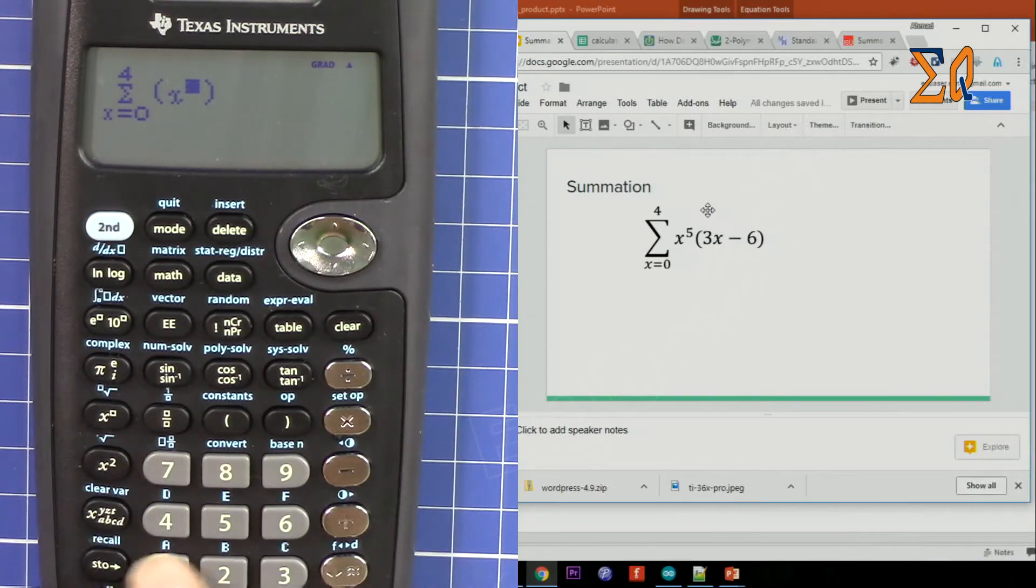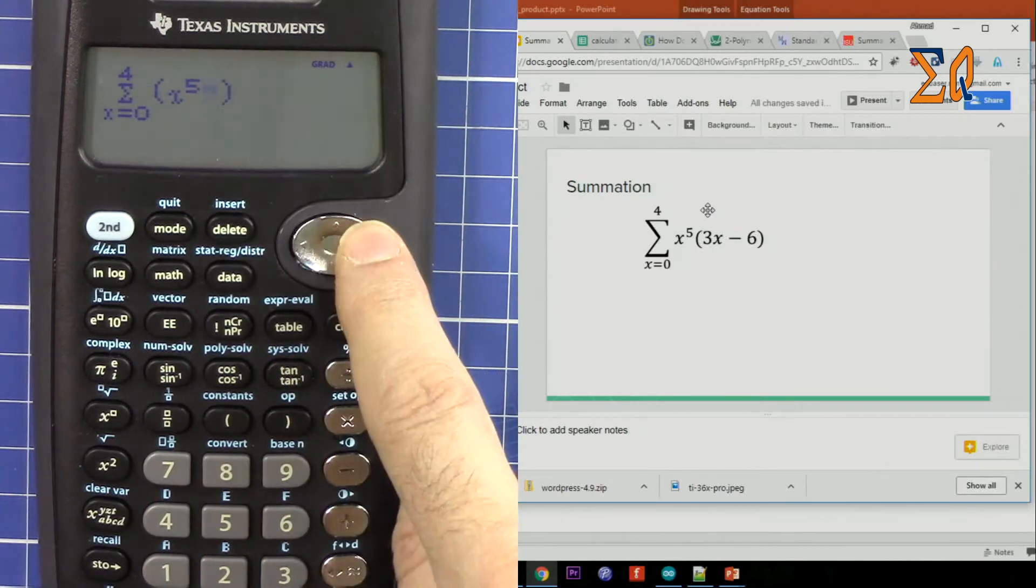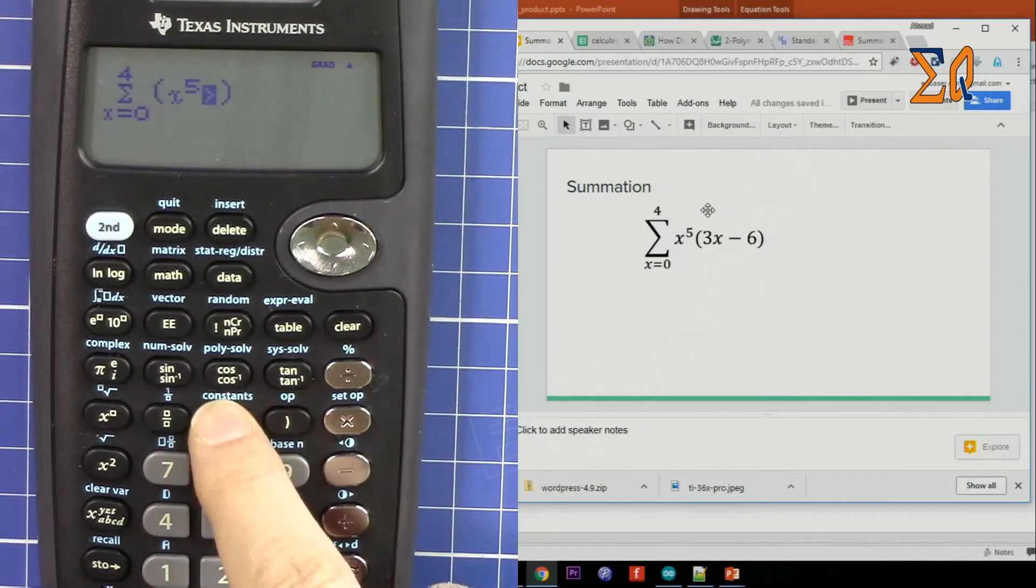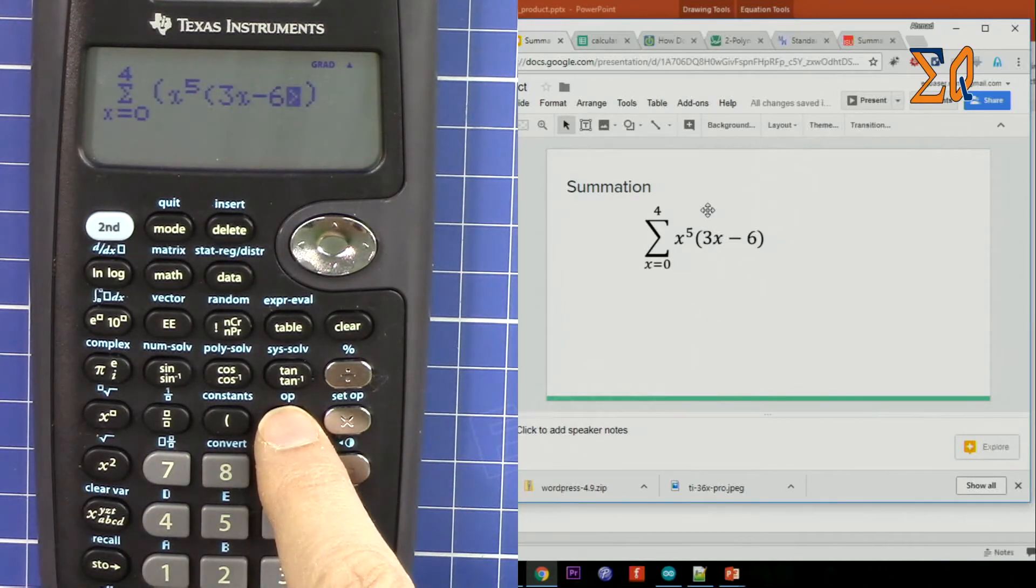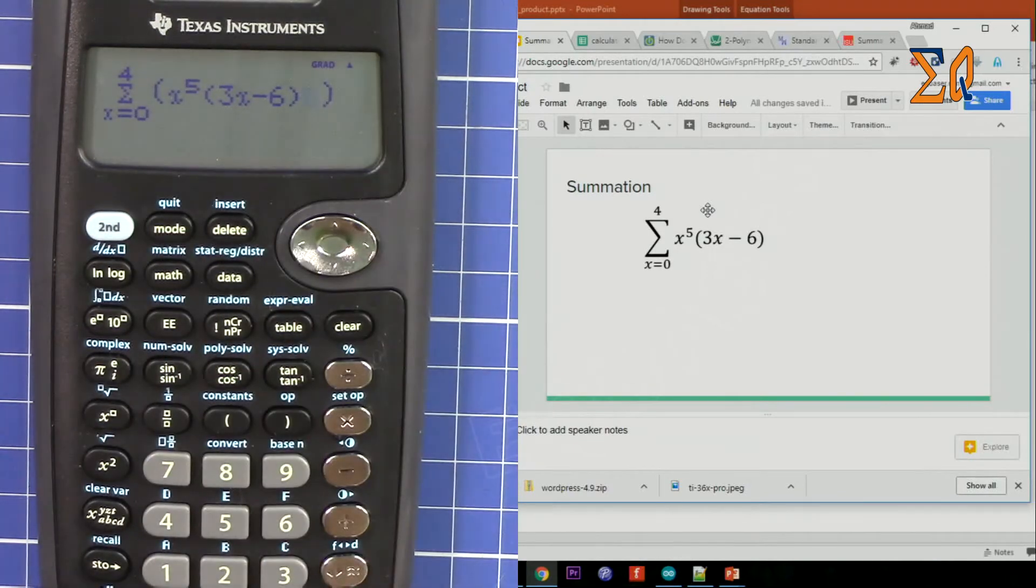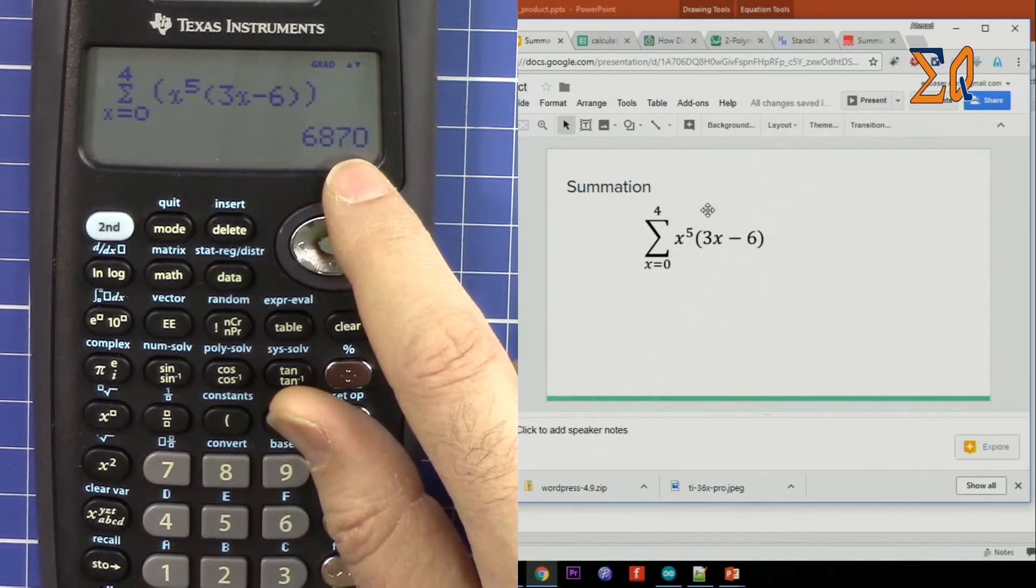And then here for the power 5, move to the right, open parenthesis, 3, and then again press this button for x, minus 6, and then close this parenthesis. We are done. Press equal sign and that's the answer.